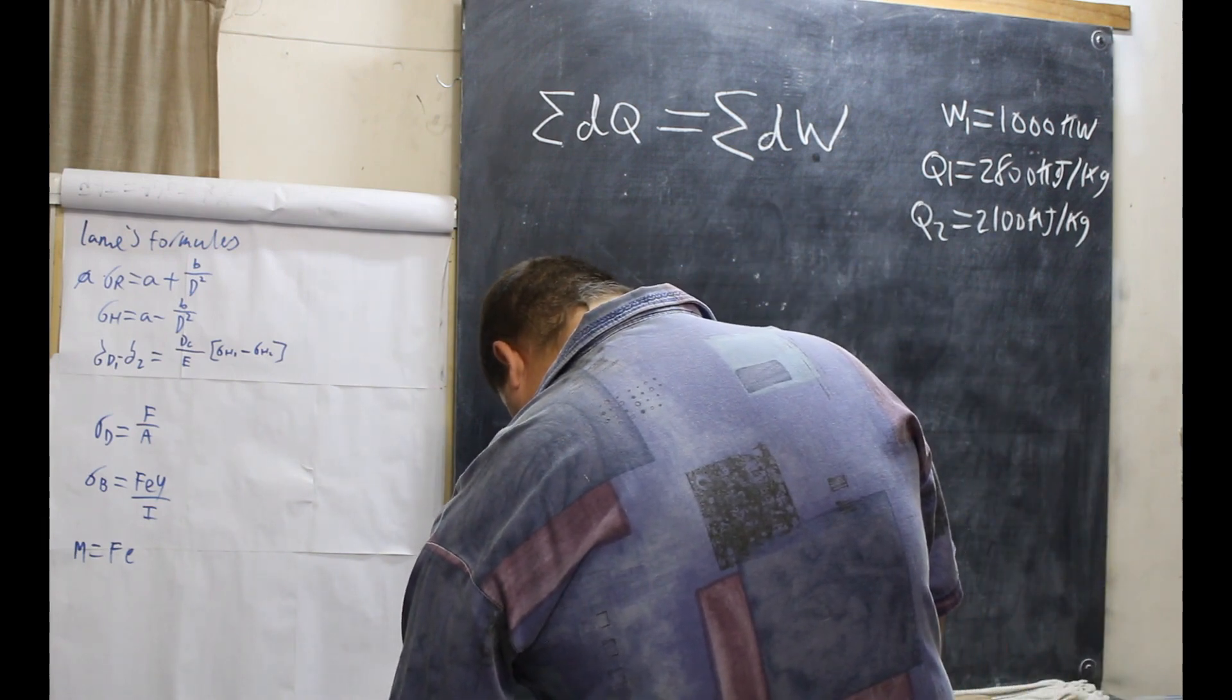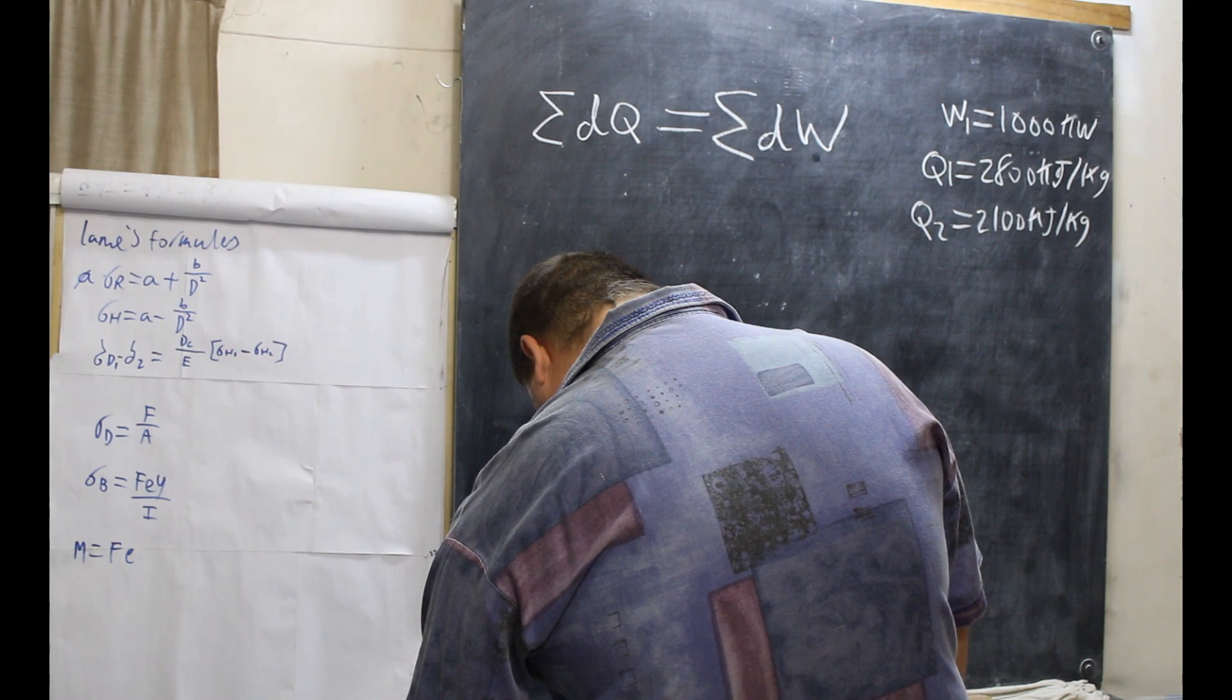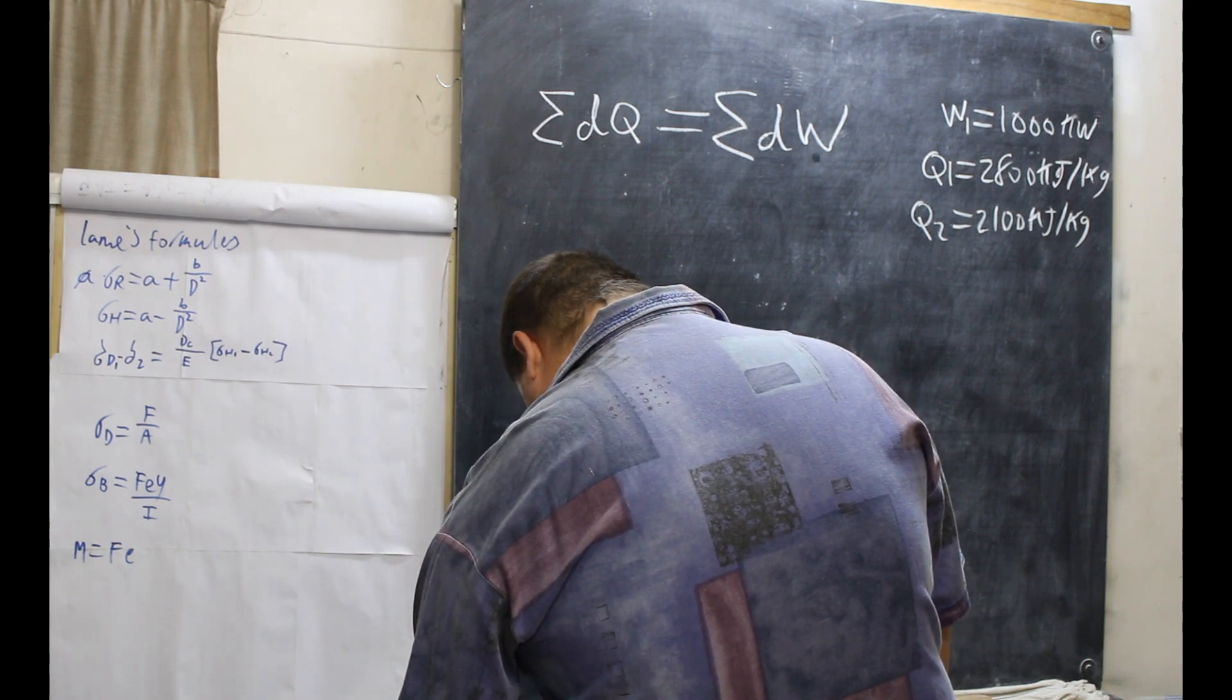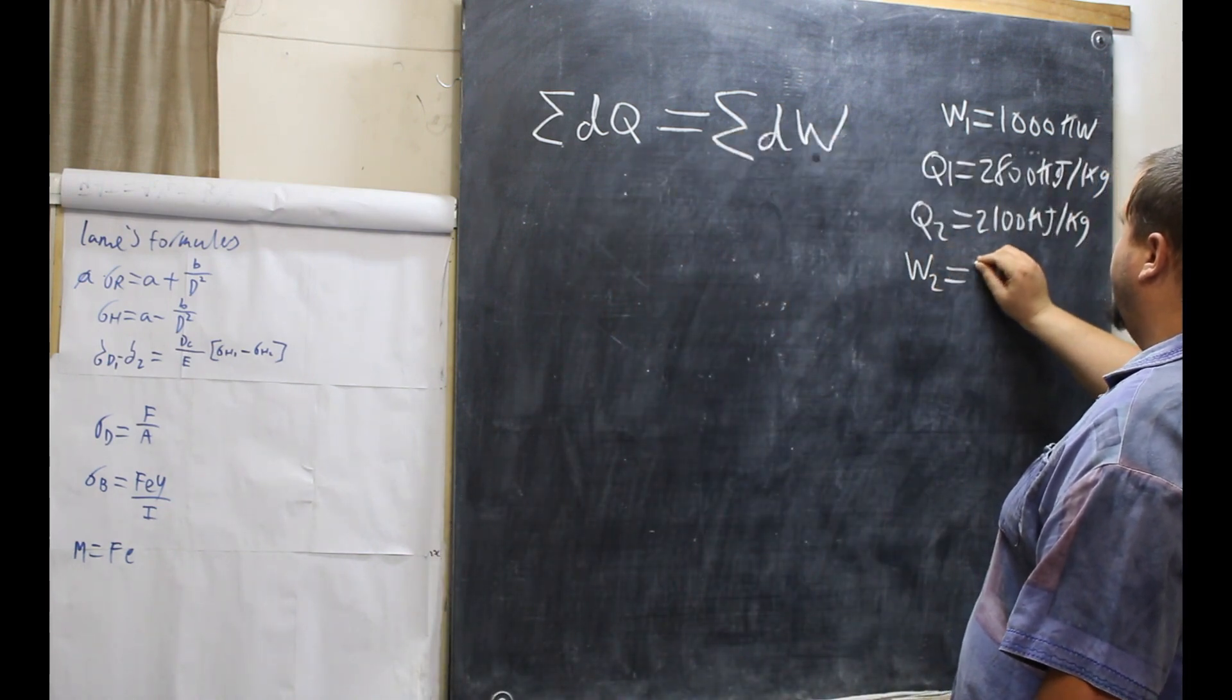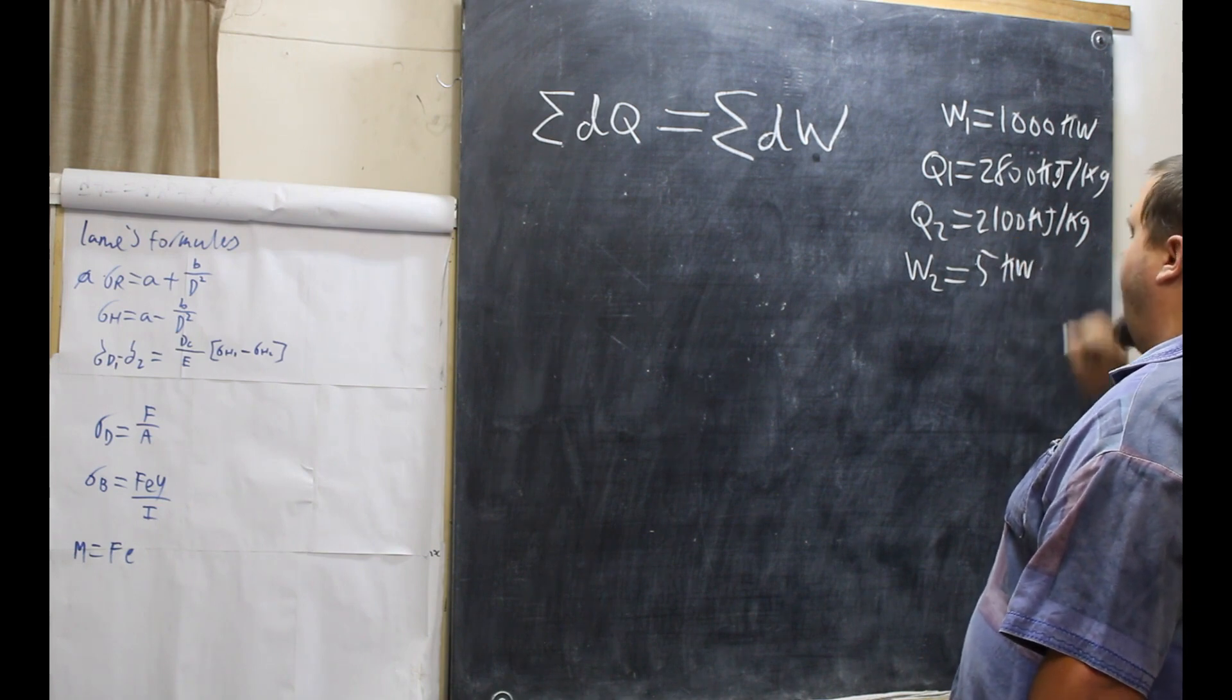And finally, the feed pump work required to pump the condensate back up into the boiler is 5 kilowatts. So our work two is 5 kilowatts of power.